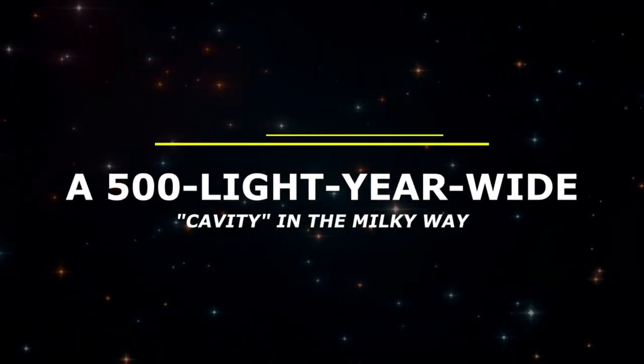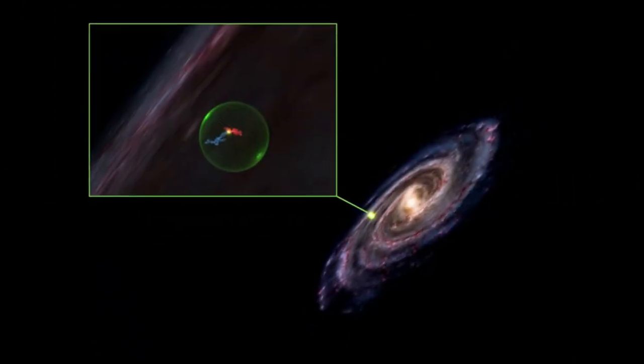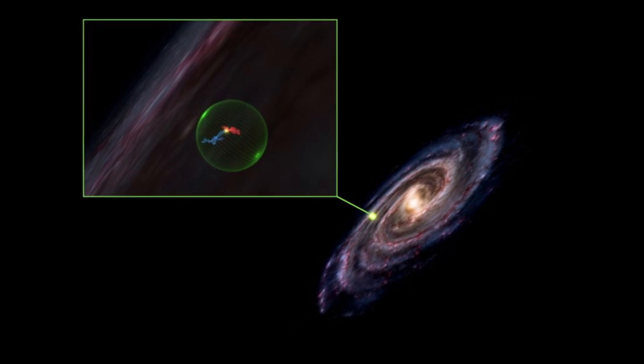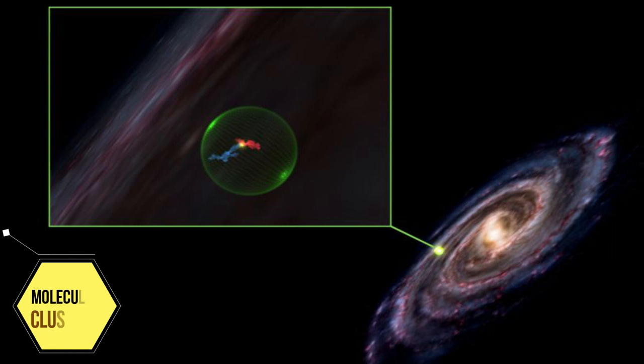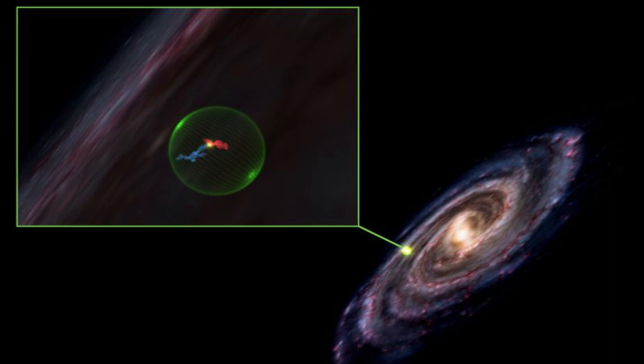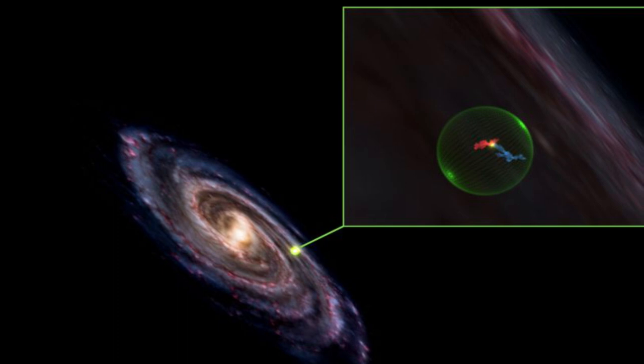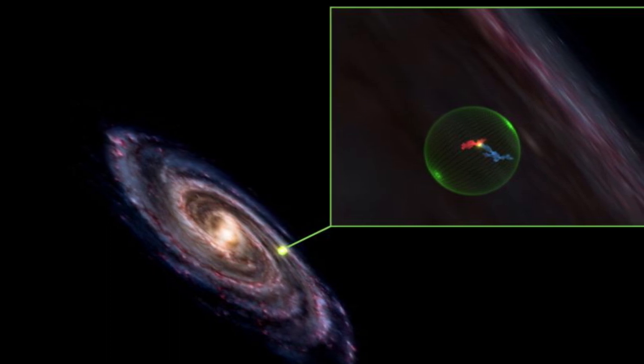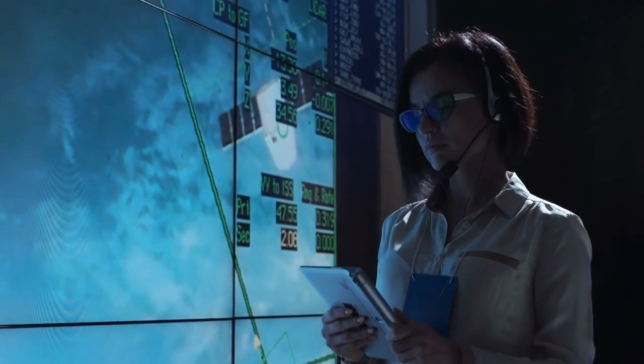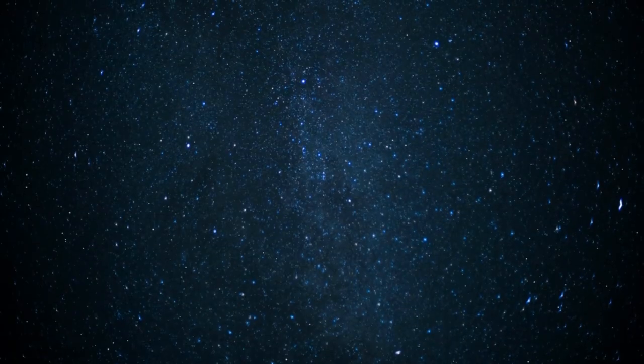A 500-light-year-wide cavity in the Milky Way. Two clouds of gas, both alike in dignity, appear side by side in the fair Milky Way. Known as molecular clusters, these enormous provinces of star-forming gas stretch across the sky, seeming to form a bridge between the constellations Taurus and Perseus. It's a celestial tale of star-crossed love. And according to recent research, it's also an enormous optical illusion.